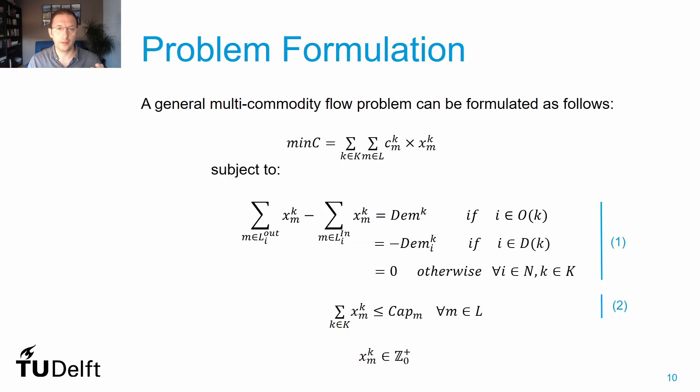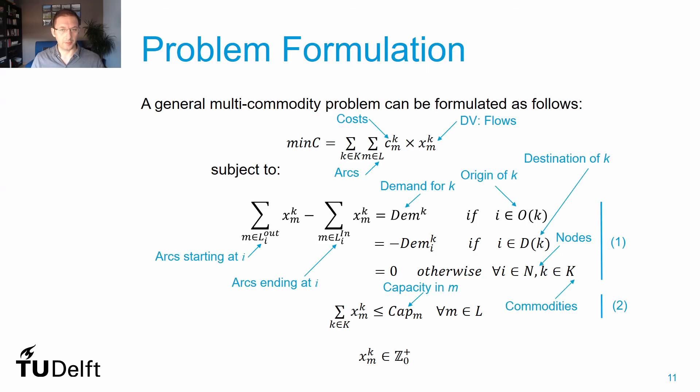Given our discussion regarding decision variables, parameters, objective function, and constraints, how can we formulate the multi-commodity flow problem? What we're seeing here is a general formulation with the objective of minimizing total cost and two sets of constraints. The first, divided in three lines, regards demand per commodity. The second set regards capacity per arc in the network.